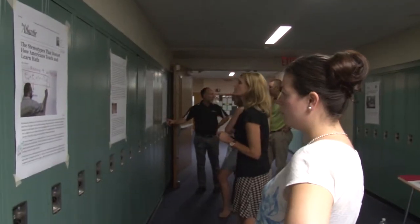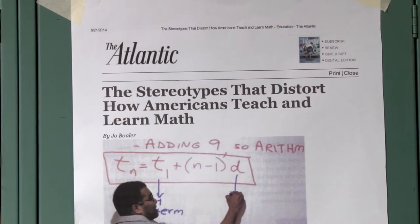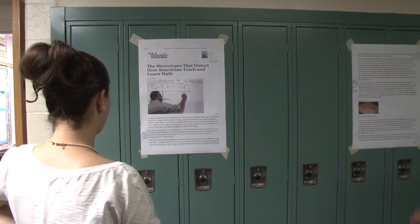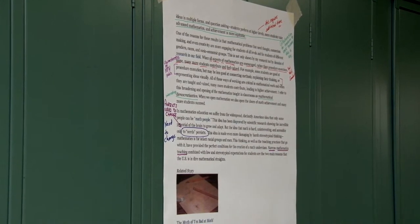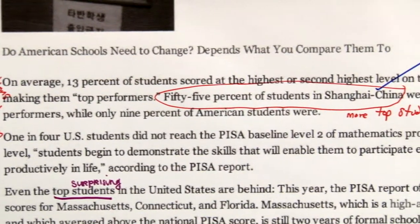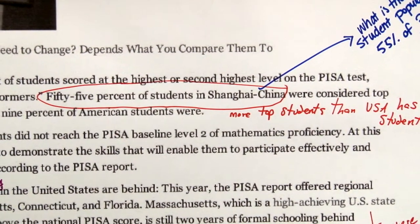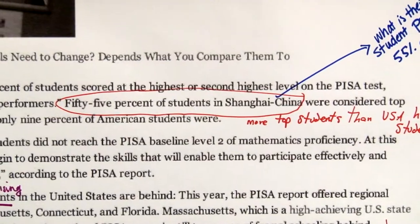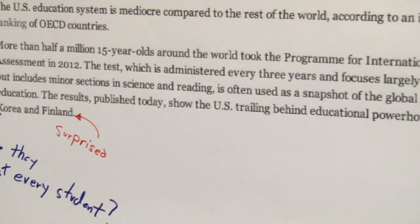Behind us, some folks are doing what's called a write-around. There are articles that speak to the question of the day, and participants are asked to read the articles and actually write on the posters with pen. It creates a record as students work through the stations — questions and thoughts that others have had. It typically raises more questions than it answers, but you're engaging with the text and leaving evidence of how you saw it, so students coming along see not just the article but the thinking of others who read it.